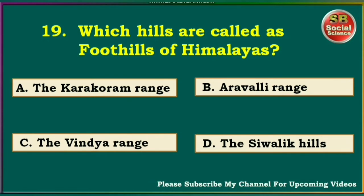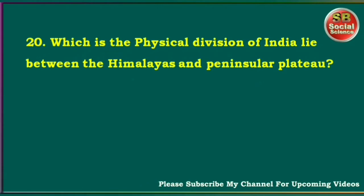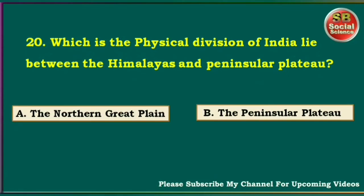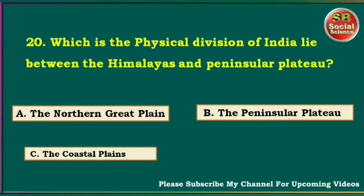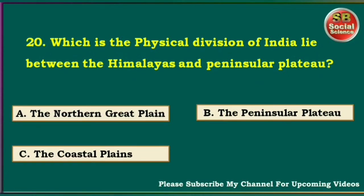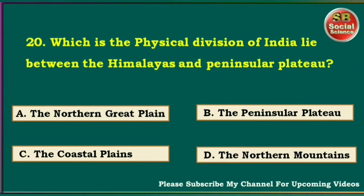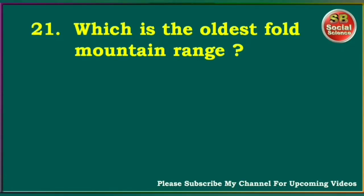Which physical division of India lies between the Himalayas and Peninsular Plateau? The Northern Great Plain, the Peninsular Plateau, the Coastal Plains, the Northern Mountains. The answer is the Northern Great Plain. Which is the oldest fold mountain range? The Karakoram Range, the Aravali Range, the Vindhya Range, the Satpura Range. The answer is the Aravali Range.